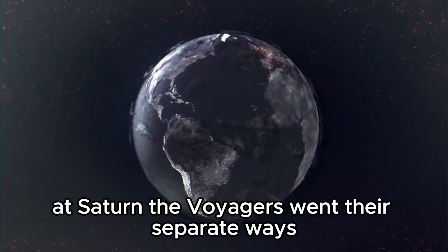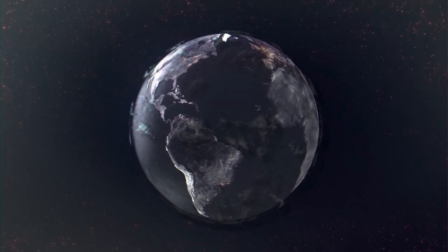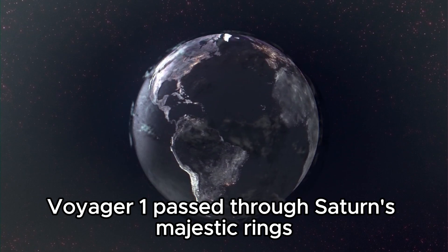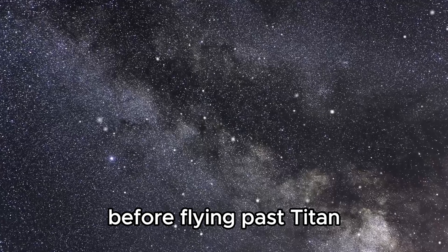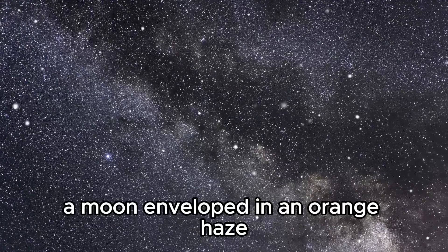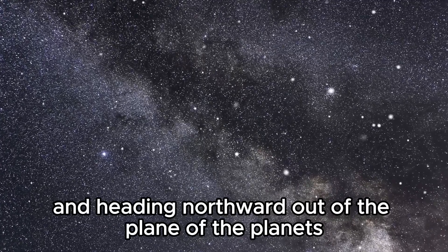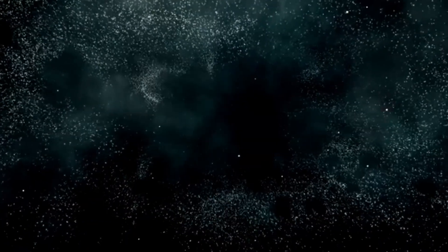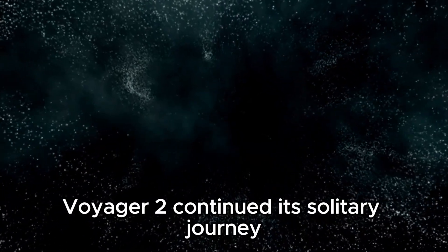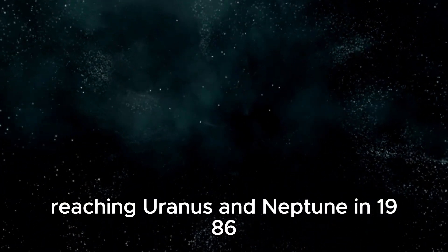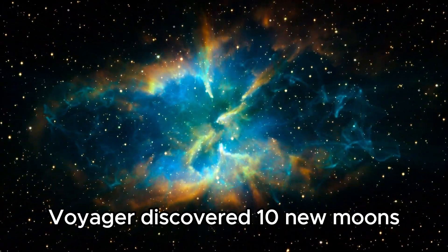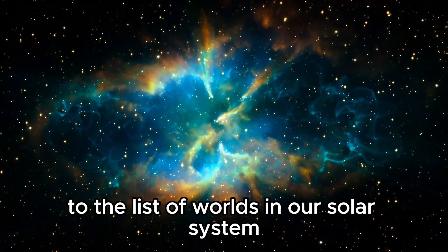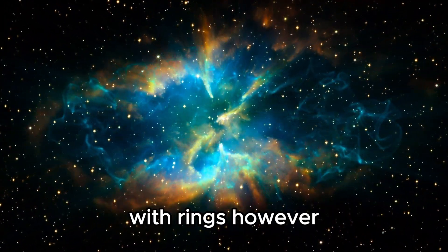At Saturn, the Voyagers went their separate ways. Voyager 1 passed through Saturn's majestic rings, enduring thousands of impacts from tiny dust particles before flying past Titan, a moon enveloped in an orange haze and heading northward out of the plane of the planets. Voyager 2 continued its solitary journey, reaching Uranus and Neptune in 1986. During its visit to Uranus, Voyager discovered 10 new moons and added the planet to the list of worlds in our solar system with rings.